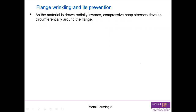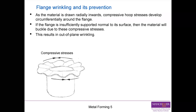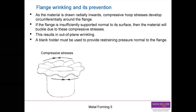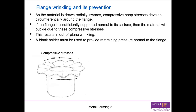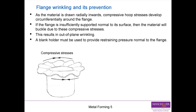As the material is drawn radially inwards, compressive hoop stress develops circumferentially along the flange. If the flange is insufficiently supported normal to its surface, the material will buckle due to these compressive stresses. You can see in the figure the direction of the compressive stresses. To address this, there is a thing called a blank holder, which can be used to provide restraining pressure normal to the flange — it is tooling that pushes and squashes the flange back to prevent it from buckling and wrinkling.